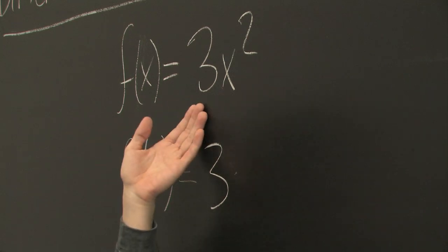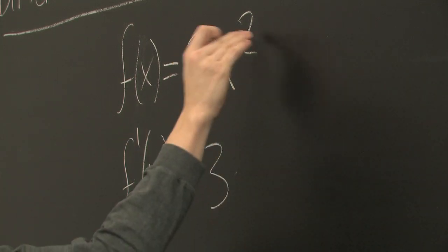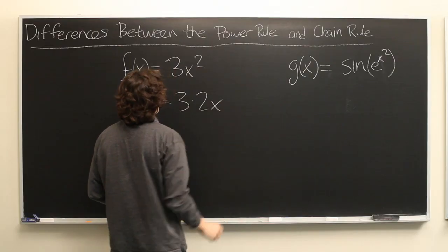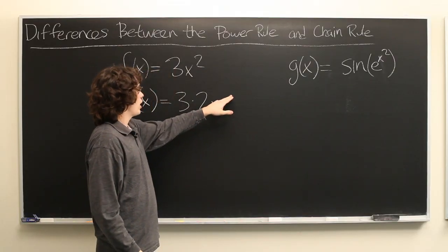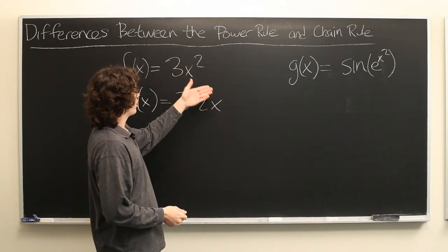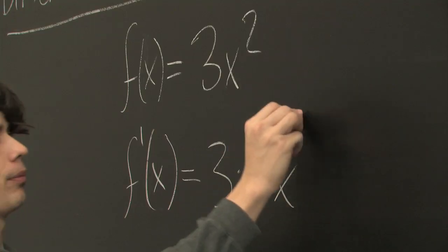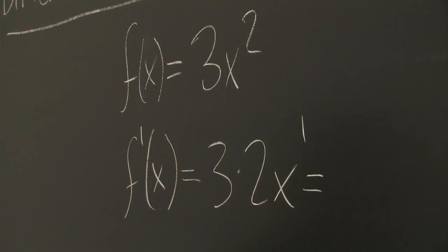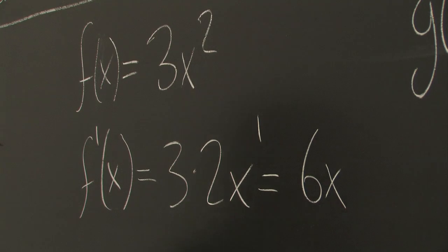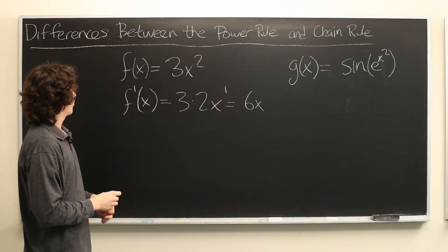We get the original constant in front, 3, times the original exponent, 2, and then x raised to whatever the original power was, minus 1. So here we have 2 minus 1 is 1, and then we can neaten this up a little bit, and it's just become 6x. The power rule is fairly simple.